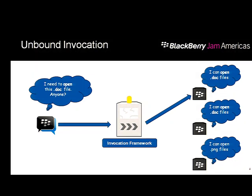You might notice there are two applications that can open doc files, but why was one preferred over the other? The process of finding suitable targets is called target brokering. Selecting one based on criteria is called target selection. The brokering is done based on parameters passed in the invocation request. Target selection is based on how strong a match the request was with the target's capability — the strongest match wins.